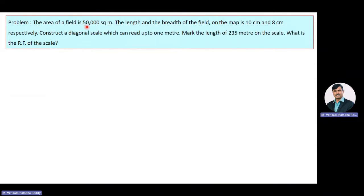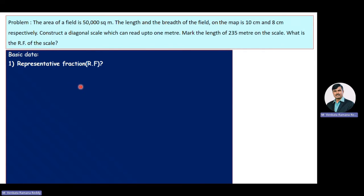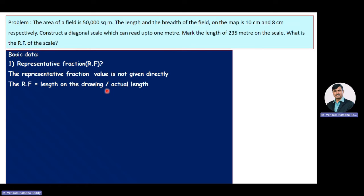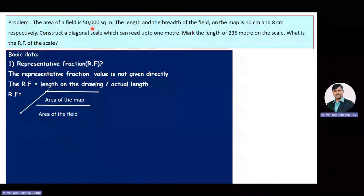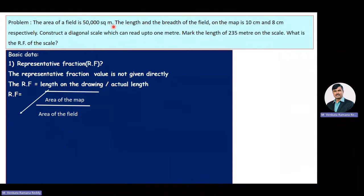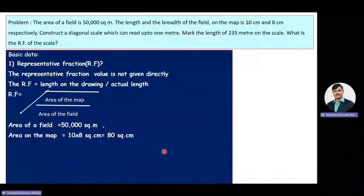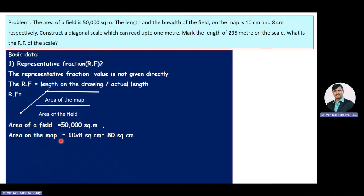The area of a field is 50,000 square meters. The length and breadth of the field on the map is 10 cm and 8 cm respectively. From this statement we will calculate the RF value. RF is equal to the square root of area of the map divided by area of the field. Area of the map is 10 cm × 8 cm = 80 square centimeters. Substituting: RF = square root of 80 sq cm divided by 50,000 square meters.